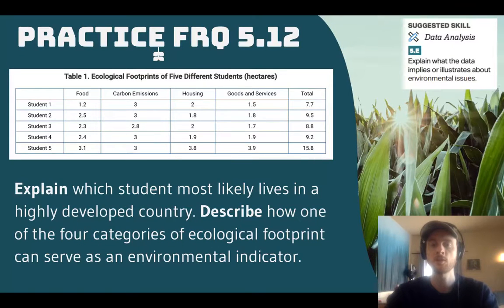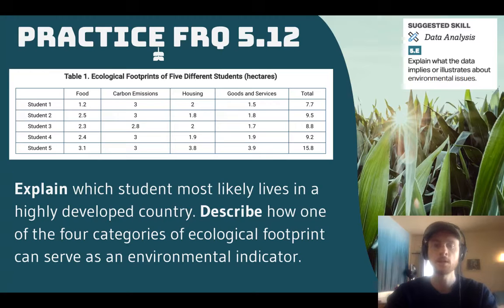Our suggested science skill for practice FRQ 5.12 is to explain what data imply or illustrate about an environmental concept. Look at this table with five different students and their ecological footprints, and explain which student most likely lives in a highly developed country, then describe how one of the four categories of ecological footprint can serve as an environmental indicator.